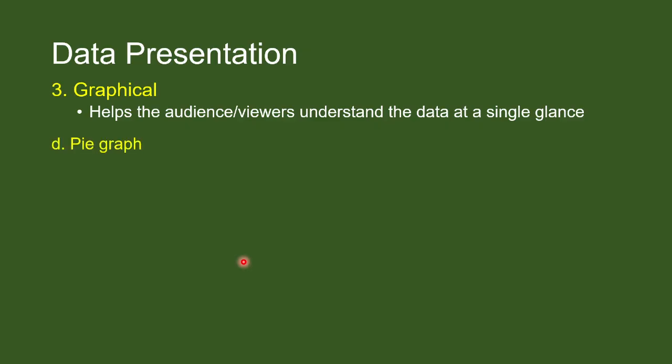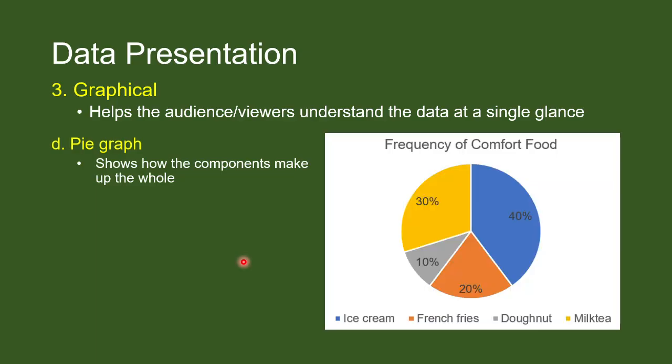Finally, we have pie graph. Pie graph talks about the components and how they make up the whole. Like what we can see in this pie graph. So, 30% of the students chose milk tea as the comfort food. 40% chose ice cream. 20% chose french fries. And 10% chose donut. So, always remember that pie graph is used if the data can be divided into different subparts. For example, the allocation of allowance of a certain student. How much does he allocate for food? How much does he allocate for mobile plan? For transportation? Another pie graph can be about the components of sales of a certain business. How much of the sales came from a certain business? How much came from investment? And so on.